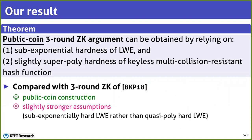Finally, compared with the 3-round zero-knowledge of Bitansky et al., our zero-knowledge argument is public coin, but it is based on a slightly stronger assumption. In particular, it relies on sub-exponential hardness of the LWE, whereas the protocol of Bitansky et al. relies on quasi-polynomial hardness of the LWE assumption. This difference in assumption does not seem very significant, but still, it is an interesting open question to close this gap between variable-round 3-round zero-knowledge and the public coin one. This concludes my talk. Thank you for listening.